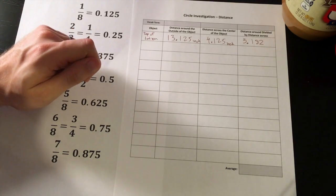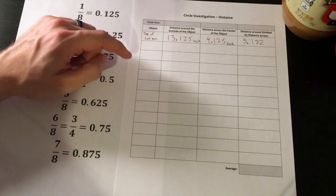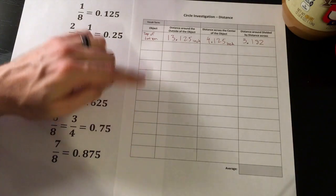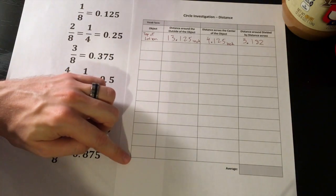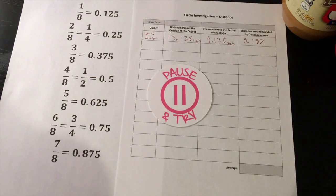As you measure the circles and record their values, I want you to record them from least to greatest, from the smallest circle to the largest circle. Go ahead and pause the video, find some circular objects, measure the distance around them and the center across, and calculate that ratio. Pause the video and try this on your own.